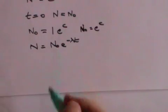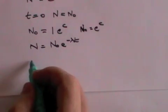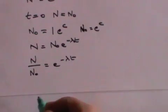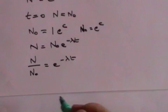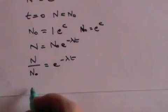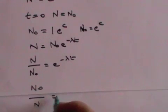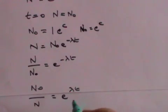This becomes N over N₀ equals e to the minus lambda t. Or, turning everything on its head, N₀ divided by N equals e to the plus lambda t.